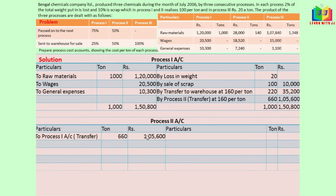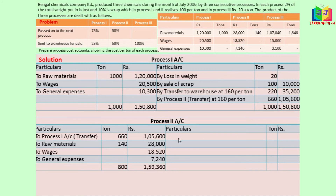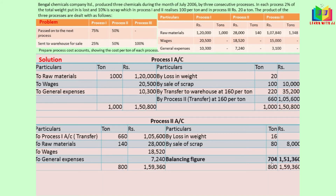For process 2, we write the expenses: 28,000; 18,520; and 7,240. The input is 800 tons. Loss in weight is 2%, so 800 × 2% = 16 tons. Sale of scrap is 10%, so 800 × 10% = 80 tons, realizing 100 rupees per ton, giving 80 × 100 = 8,000 rupees. The balancing figure is 704 tons and 1,51,360 rupees.